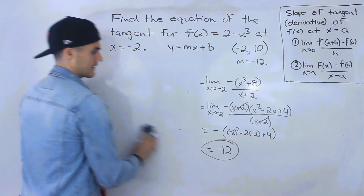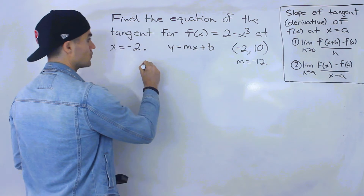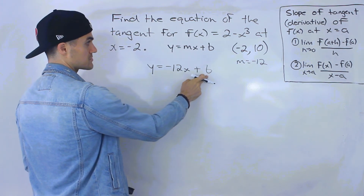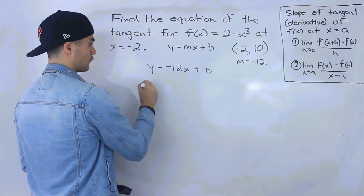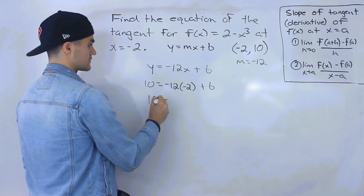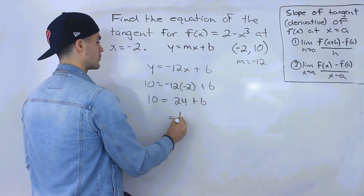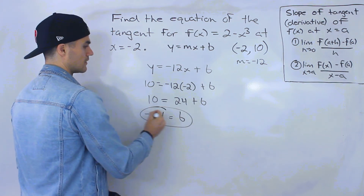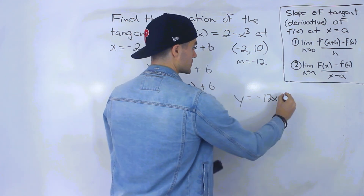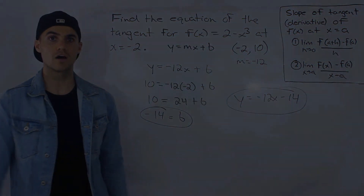To find the final equation of the tangent, we have a slope of negative 12 and the coordinate (negative 2, 10). Substituting into y equals mx plus b: y equals negative 12x plus b. Plugging in y equals 10 and x equals negative 2, we get 10 equals negative 12 times negative 2 plus b, so 10 equals 24 plus b, meaning b equals negative 14. The equation of the tangent is y equals negative 12x minus 14.